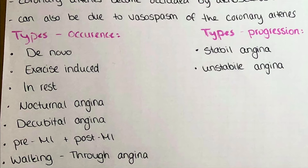Other types of angina pectoris are differentiated by their occurrence. It can be de novo, arising spontaneously and without prior notice. It can also be exercise-induced, where only heavy physical workload leads to underperfusion of the heart as the demand for blood is increased.